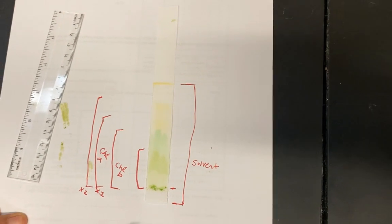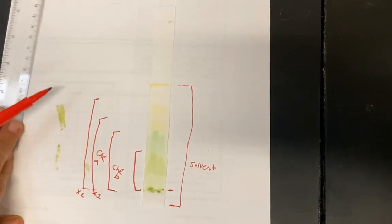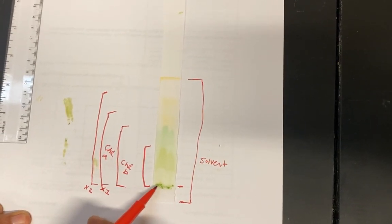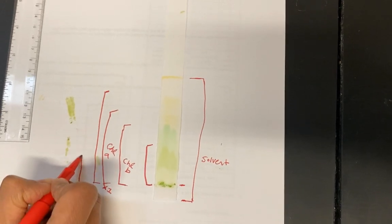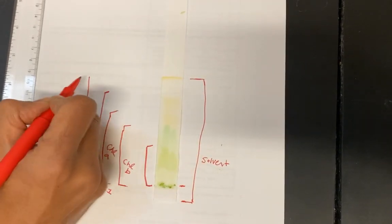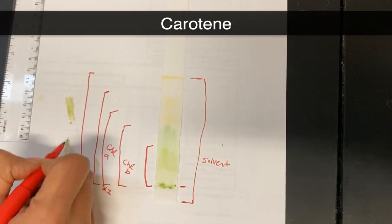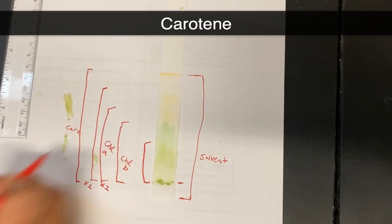And then the last one is the carotene that goes all the way up. Now, remember, it's not the same as the solvent. The solvent started from the bottom, but the carotene started from where we put it, right? So we're going to go from here all the way up to there. Okay, so this is my carotene.